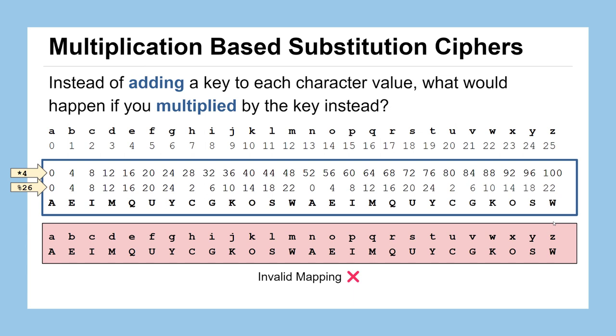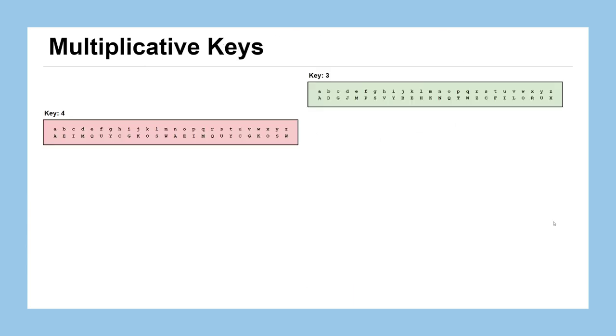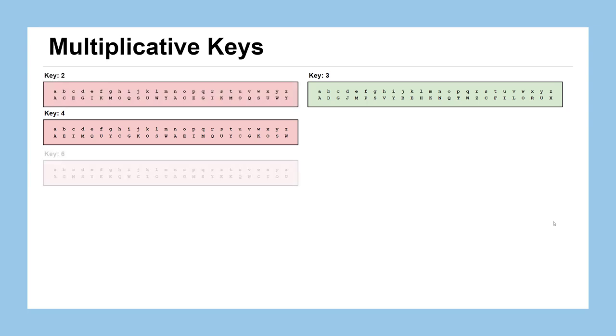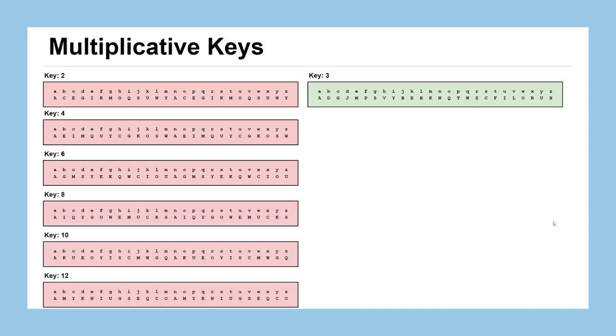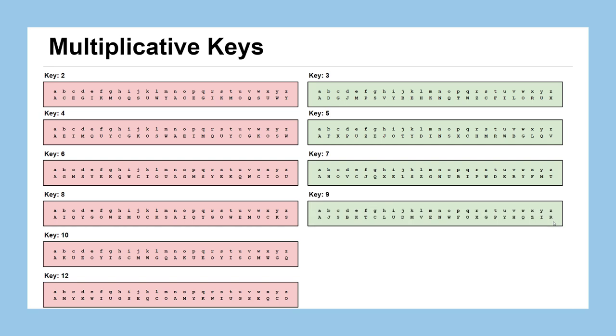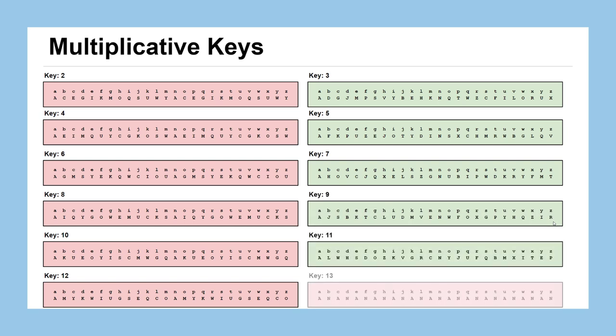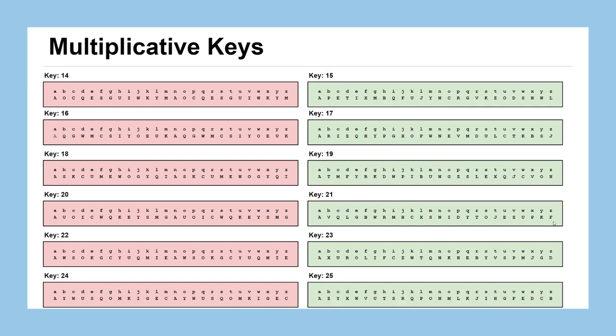So why did it work for one and not the other? Let's take a look at some other key values. If we'd used a key of two, that would be an invalid mapping. Key of six is invalid. Key of eight is invalid. Key of 10 is invalid. And key of 12 is invalid. Let's check out these odd numbers. Key of five was good. Seven, okay. Nine's all right. Eleven works. Oh, key 13 does not work. In fact, key 13 seems to fail in spectacular fashion. We only have two letters used in the ciphertext, A and N.